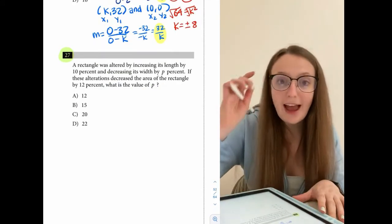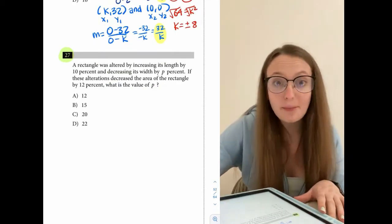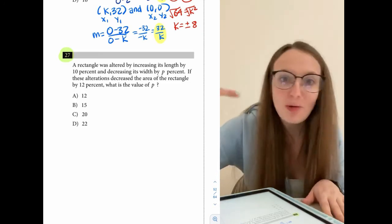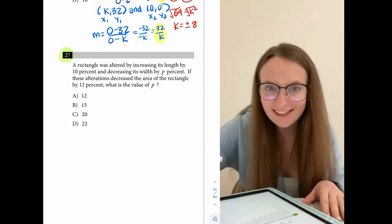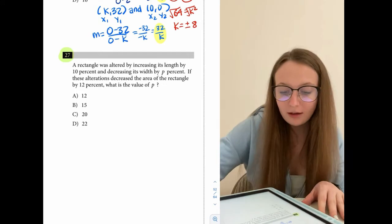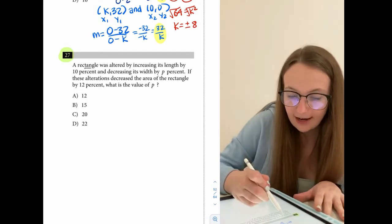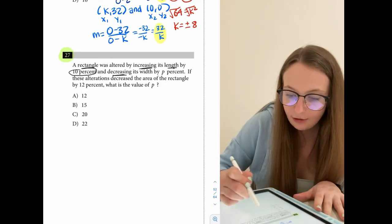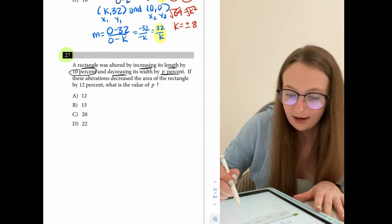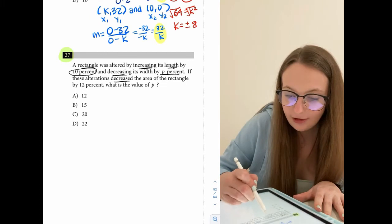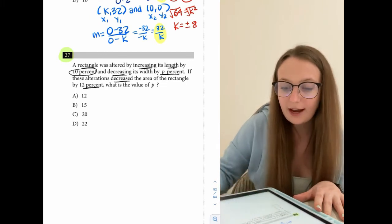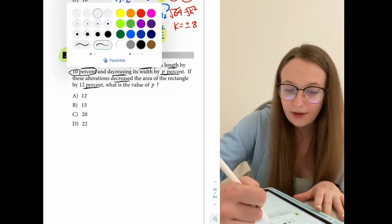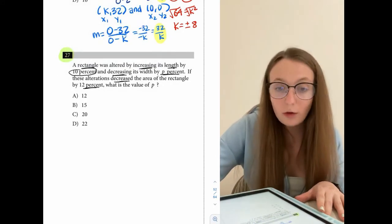Alrighty, so next up we have number 27, which is a percent question. We know them, we love them. Hopefully we'll love them at least after I show you how to do this. So they tell us a rectangle was altered by increasing its length by 10% and decreasing its width by p%. If these alterations decrease the area by 12%, what is the value of p? Okay, so two things we got to know.